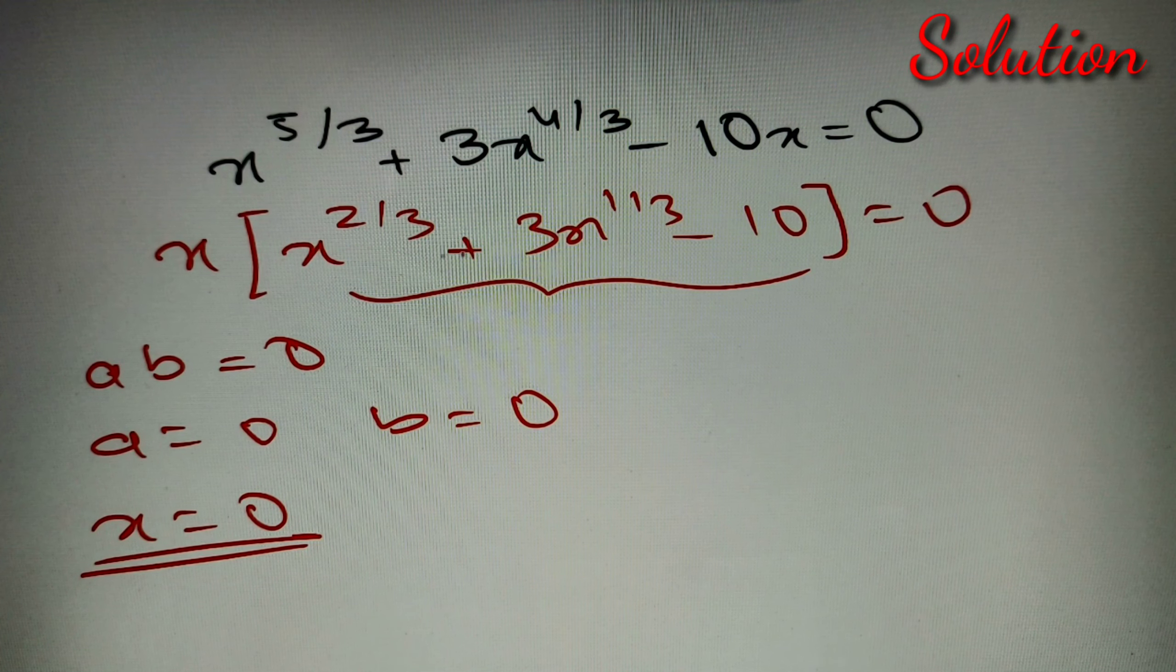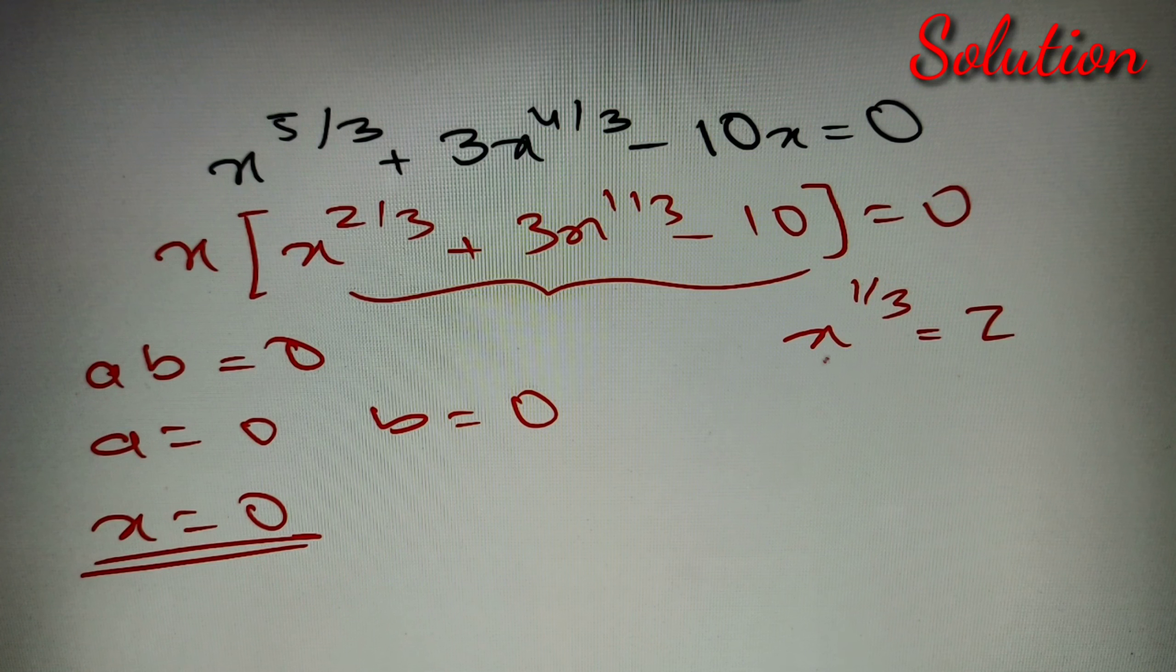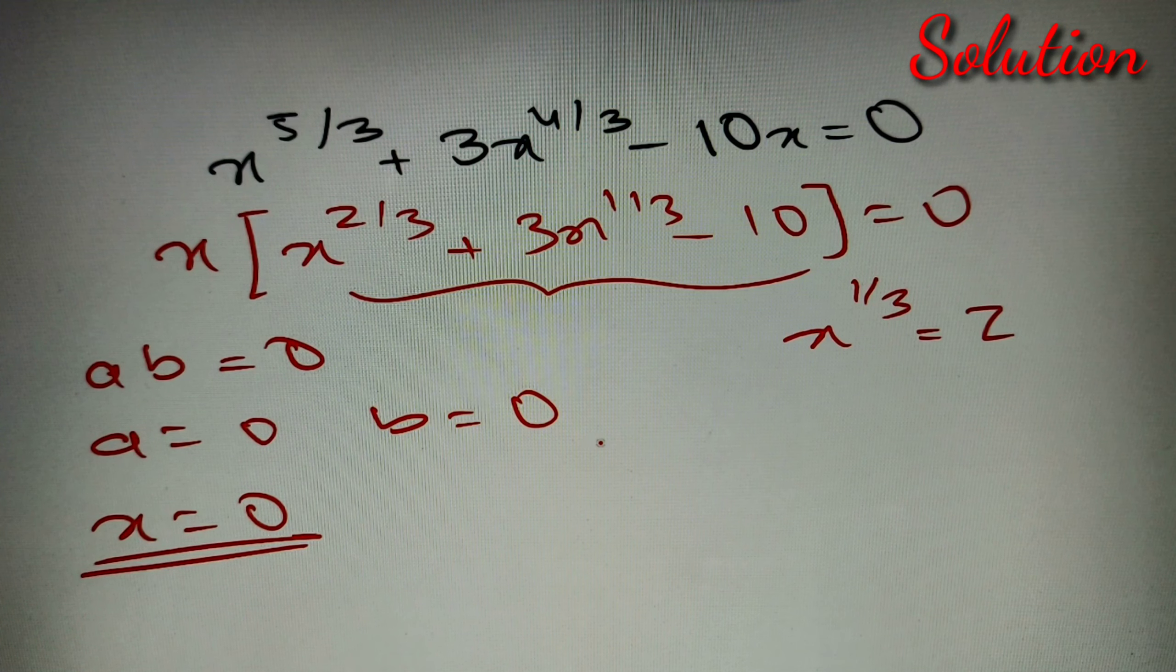Now you can see that we can form it as a quadratic equation if we take x^(1/3) as z. So if x^(1/3) = z, we'll basically get z² + 3z - 10 = 0.